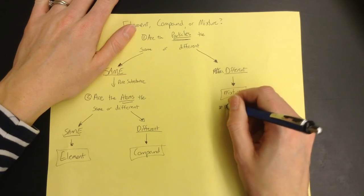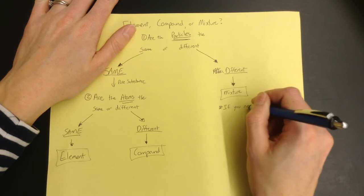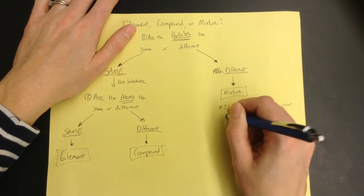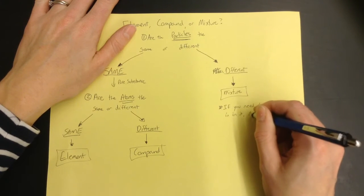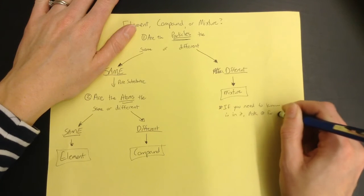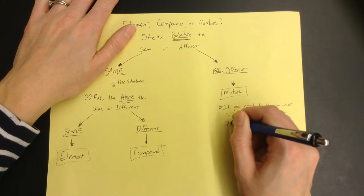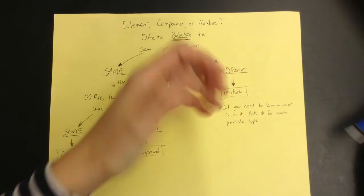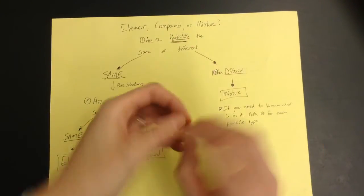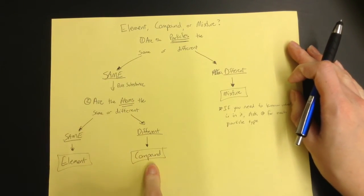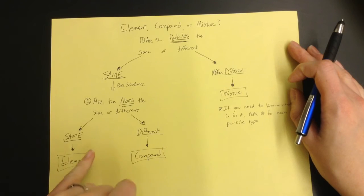Now the note here, if you need to know what is in it, ask question two for each particle type. So if you've got some individual things, and maybe you've got some things stuck together, maybe you have a third thing that's a bunch of different things stuck together, then you can find out if each one of those is an element or a compound, and then it could be a mixture of elements, or a mixture of compounds, or a mixture of elements and compounds.